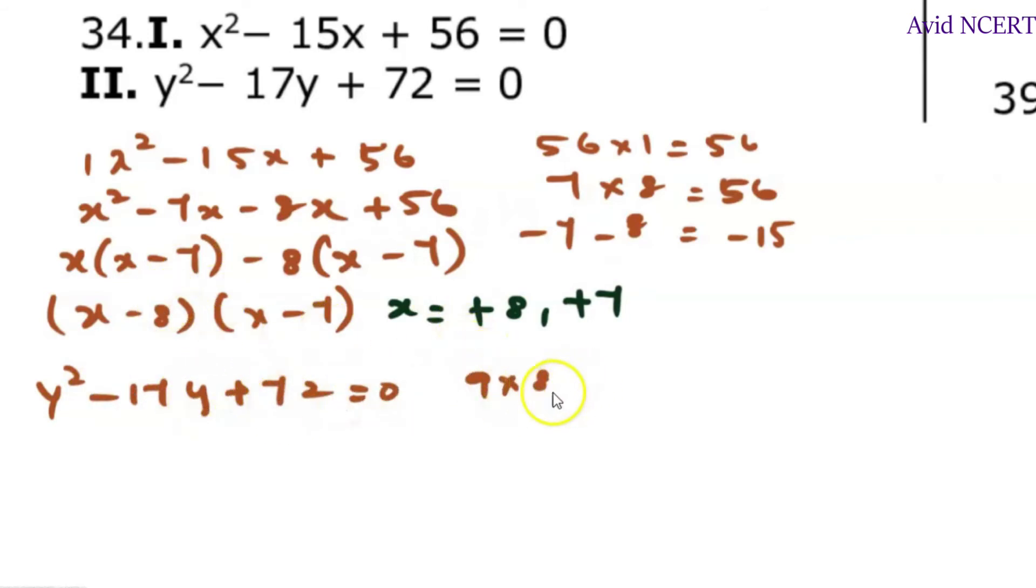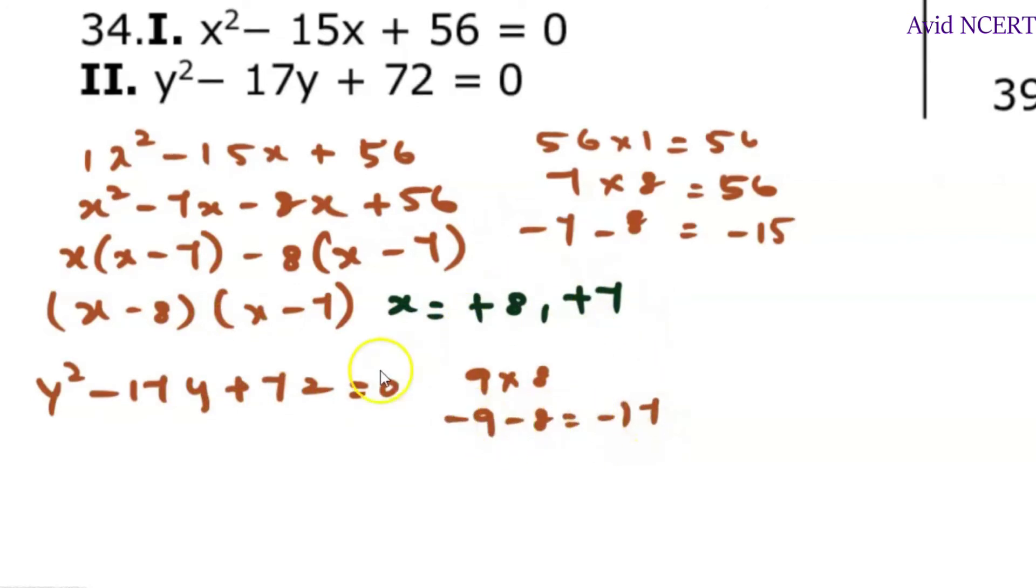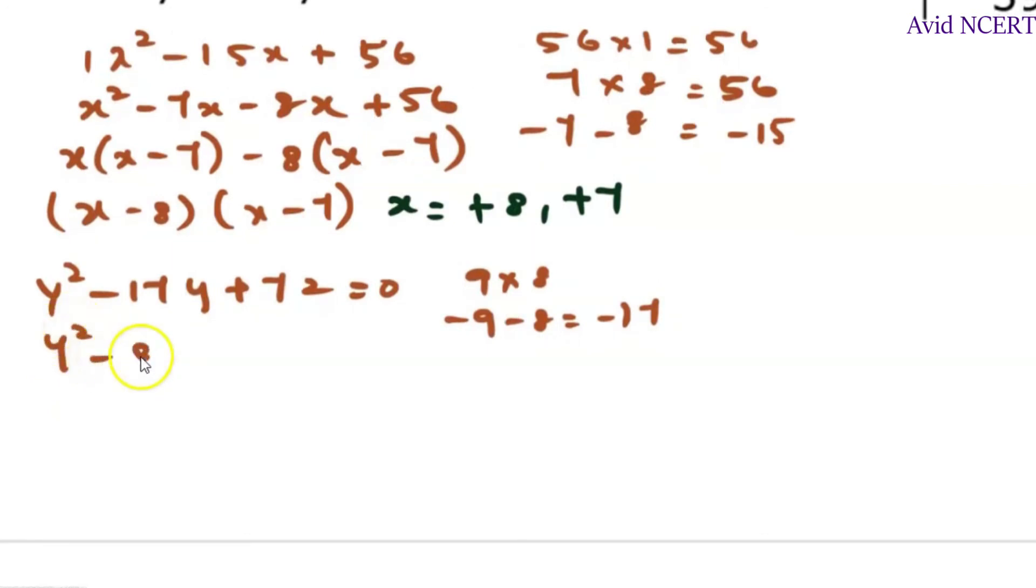And again, it is minus 9 minus 8 equals minus 17. So y square minus 9y minus 8y plus 72 equals 0.